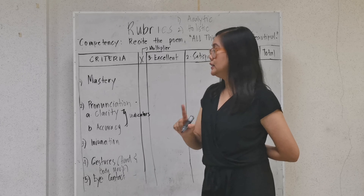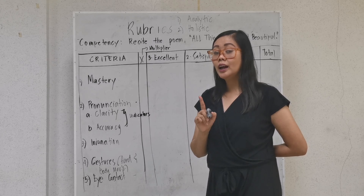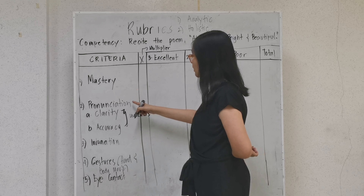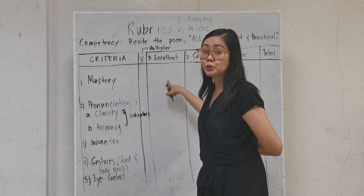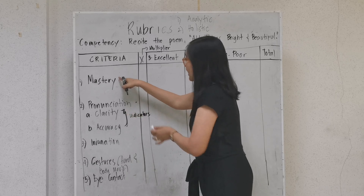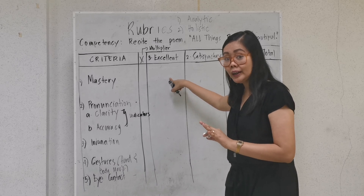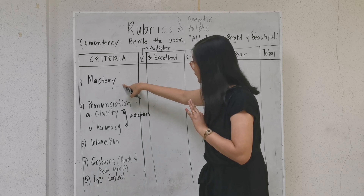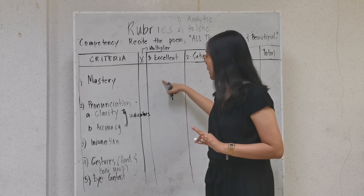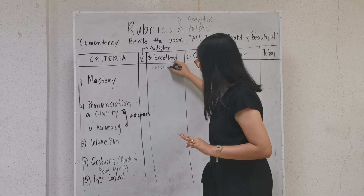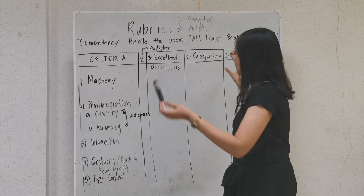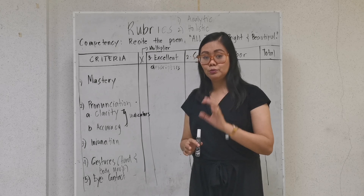The last distinct part of an analytic rubric is what we call descriptors. A descriptor is the description of the criteria at every level of performance. For example, under the criteria 'mastery' at the excellent level, what you write there is the descriptor. The descriptors are what is placed across each criteria opposite the level of performance. Now we are familiar with the different parts of a rubric, so we are ready to develop our rubric.